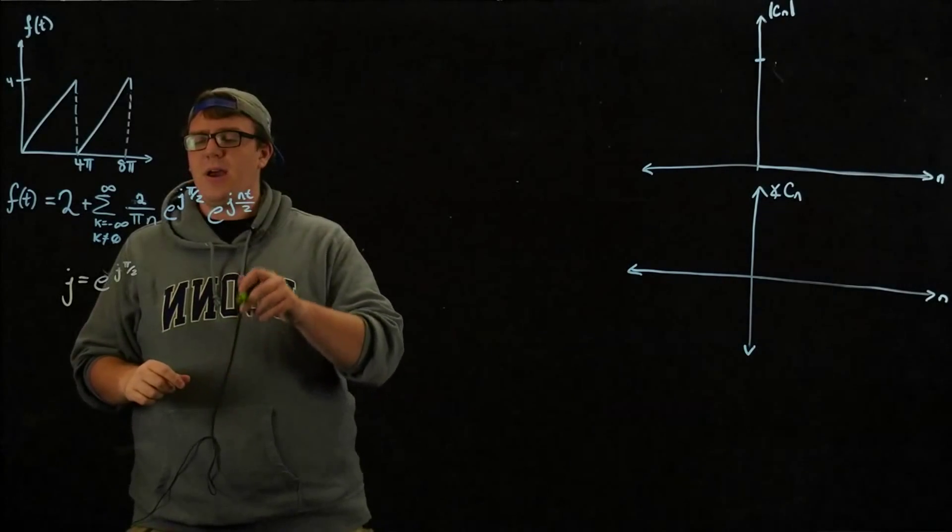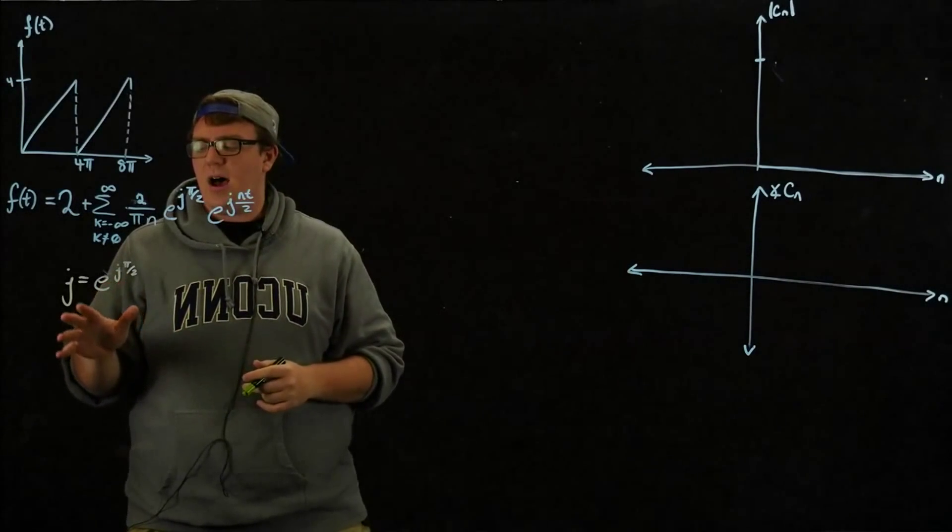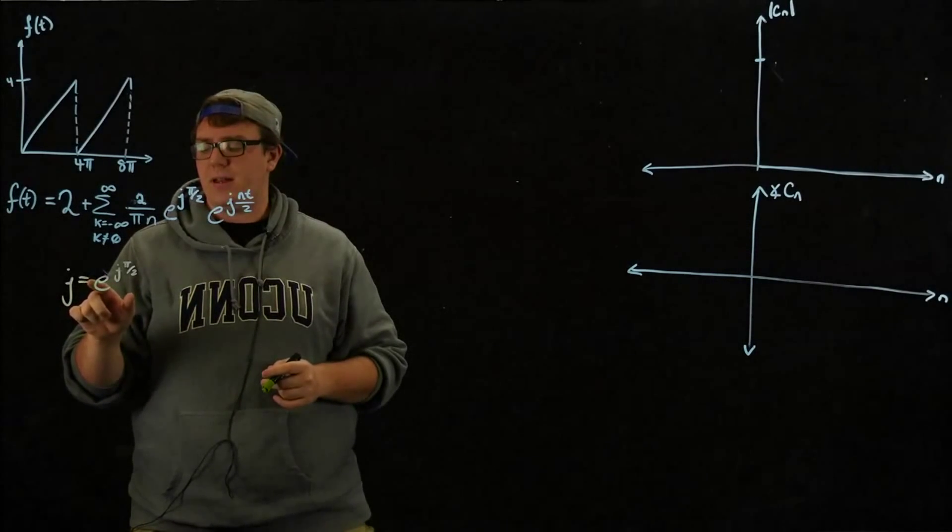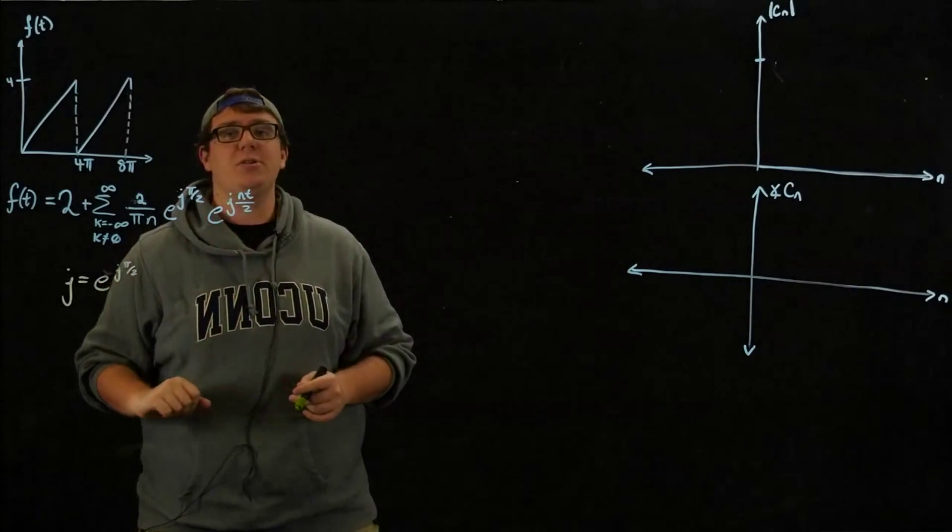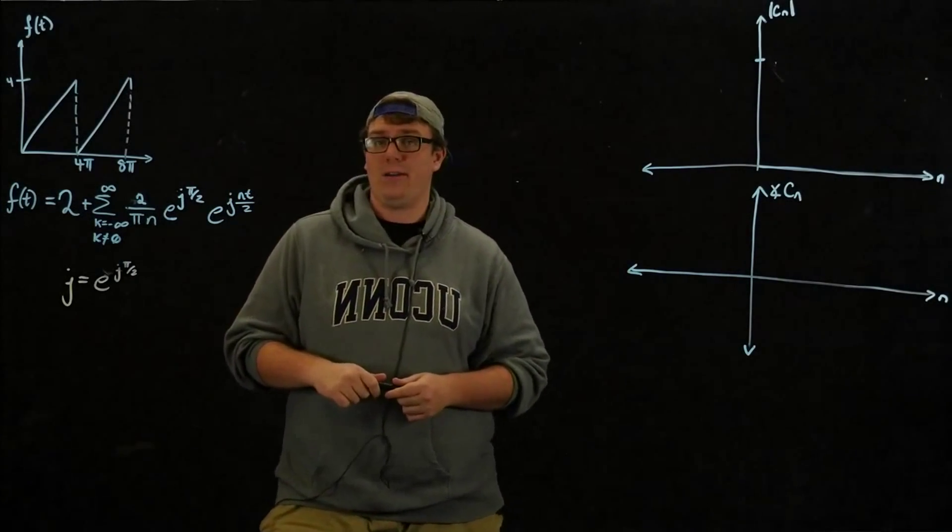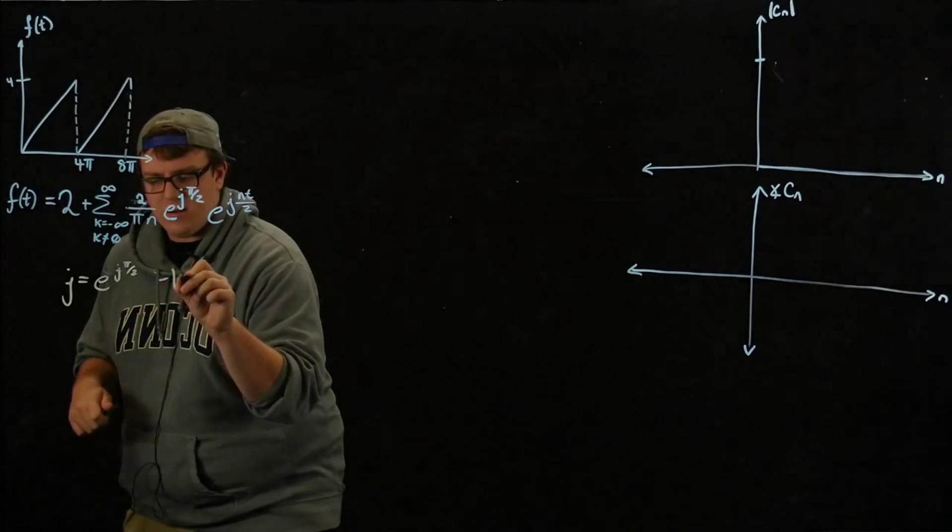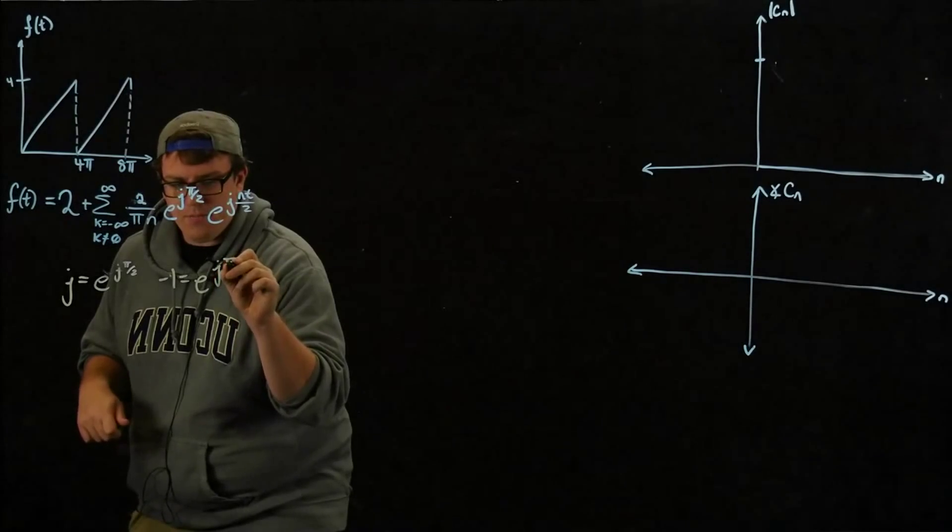The one mistake that I made was I said that this was e to the j pi. That was a mistake because j is actually e to the j pi over 2, not pi. E to the j pi is negative 1, which will come up later. Negative 1 equals e to the j pi.